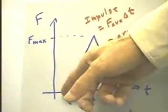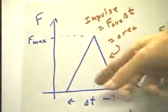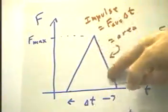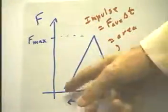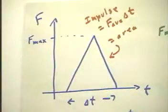In a simple case, the force is just linear. It goes from zero up to some maximum and then back down to zero over an interval delta T. And in this case, it's very easy to find the average force.